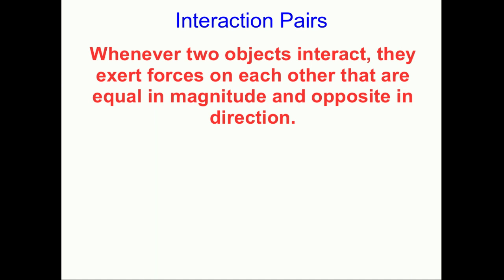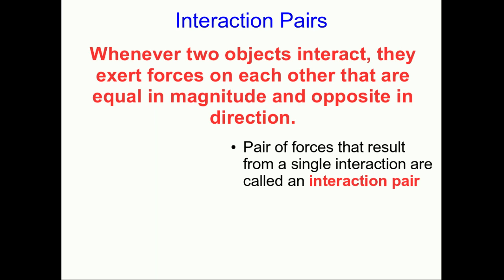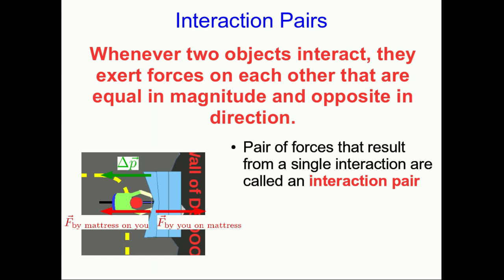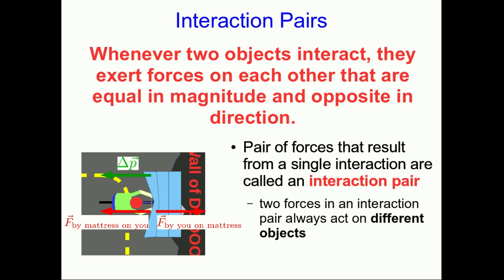This is a law: whenever two objects interact, they exert forces on each other that are equal in magnitude and opposite in direction. The pair of forces from a single interaction are called an interaction pair. For example, when you hit the mattress, the mattress exerted a force on you — which brought you to rest — and you exerted a force on the mattress, which compressed it. These two forces are in opposite directions and of the same magnitude, and they always act on two different objects.